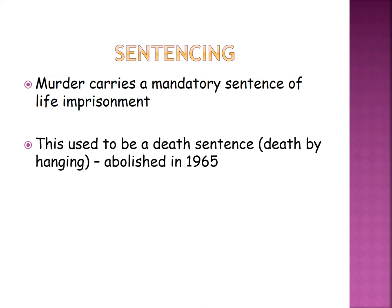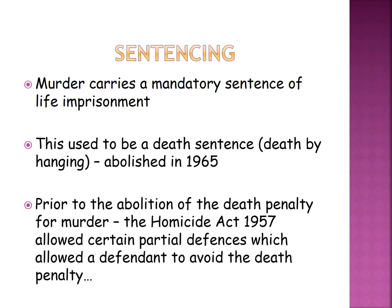The reason why we have voluntary manslaughter now is because there were a number of campaigners who campaigned quite ferociously for the removal and abolition of the death penalty for murder. In response to that, although it took until 1965 to remove it, just some years before, parliament passed an act called the Homicide Act 1957, which allowed certain partial defences to be raised, which in turn would allow a defendant to avoid the death penalty.